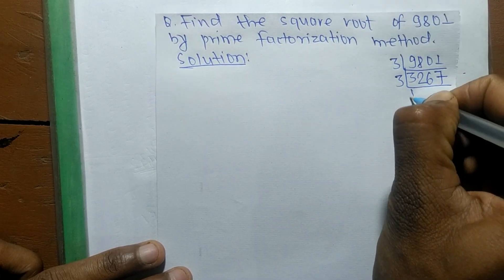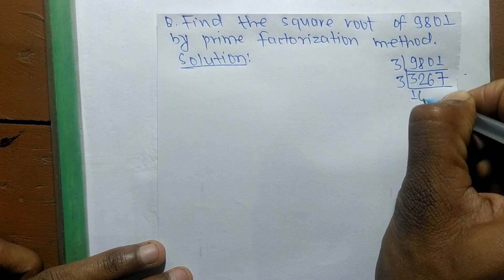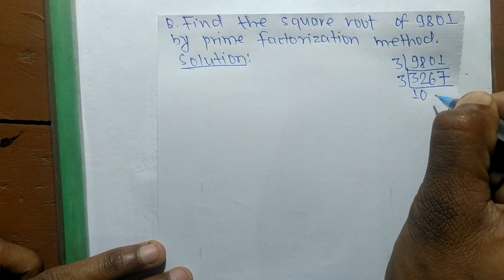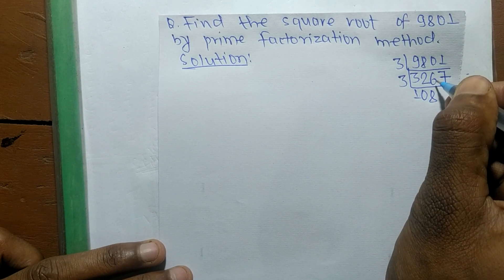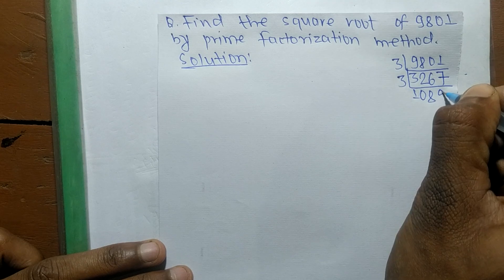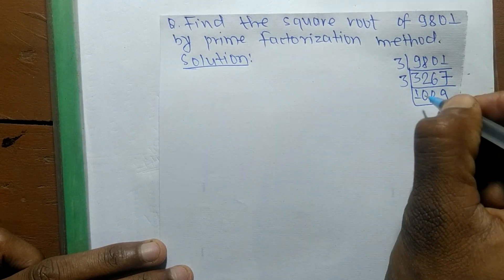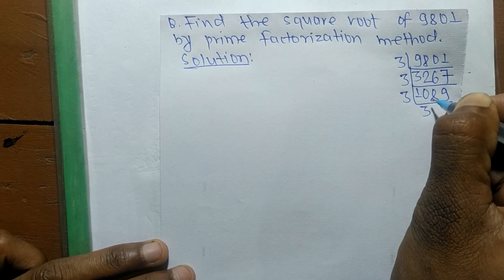3 times 1 is 3. Bring down 0, now it is 26. 3 times 8 is 24, remainder 2. 27, 3 times 9 is 27. So again, 3 times 3 is 9, remainder 1. 18, 3 times 6 is 18.